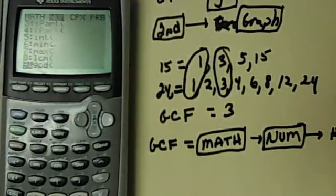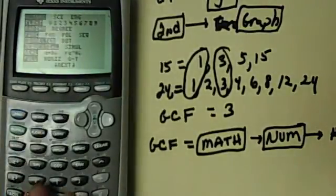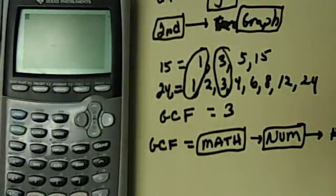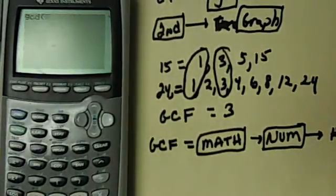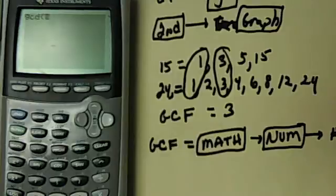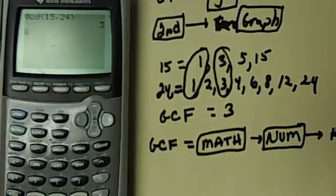Once you do that, so we did math, we went over to number, and then we hit number 9. You're going to get this. And you're going to plug in the numbers, but you have to use a comma between the numbers. So I'm going to plug in the two numbers here, 15 comma 24, close my parenthesis, and it's going to give me back 3. Much easier than trying to keep listing the factors.